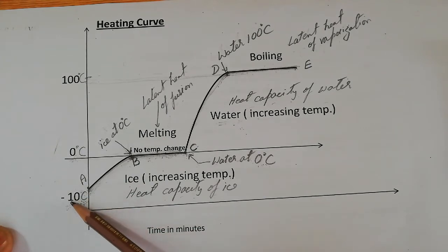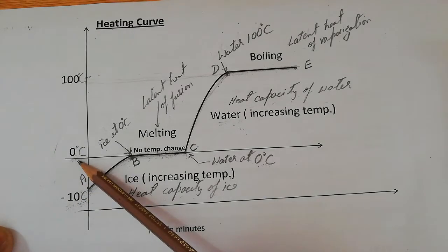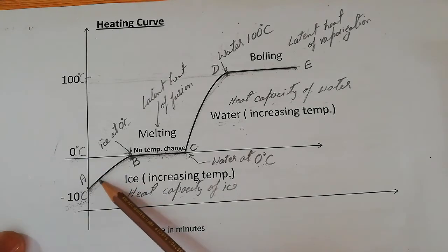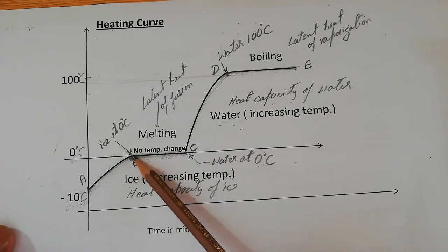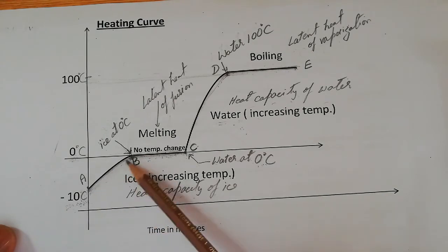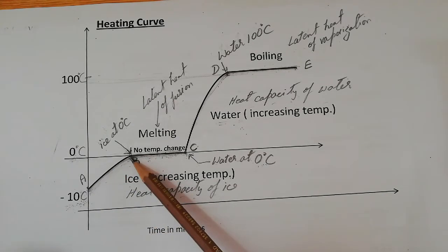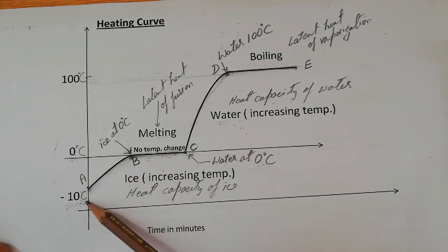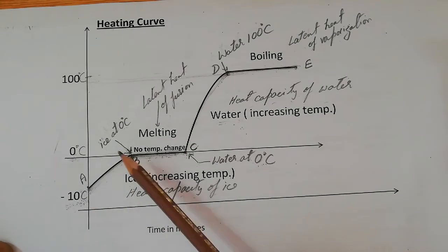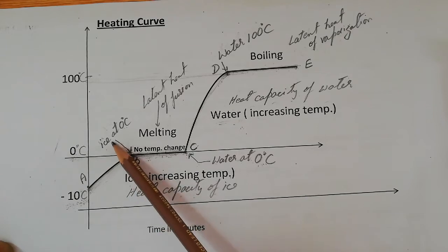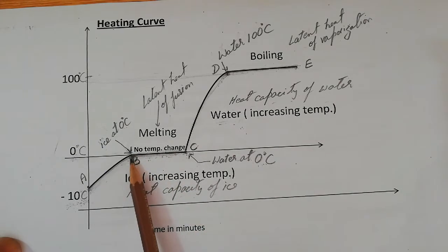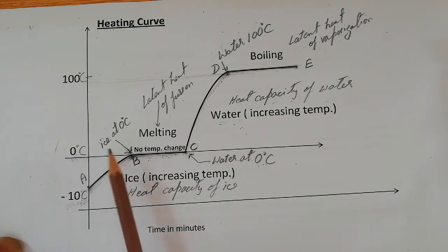As the ice is gaining heat energy and its temperature is increasing from minus 10 degrees Celsius to zero degrees Celsius, no change in state will occur during this interval. From A to B, there is no state change, only an increase in temperature. At point B, the ice is at zero degrees Celsius.